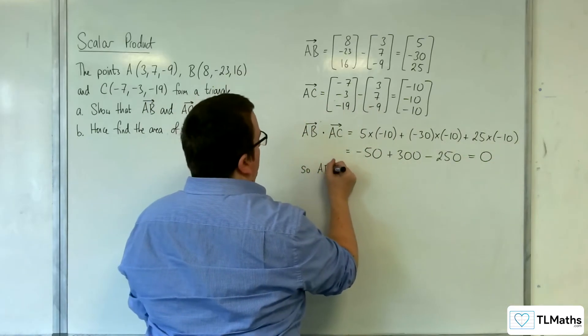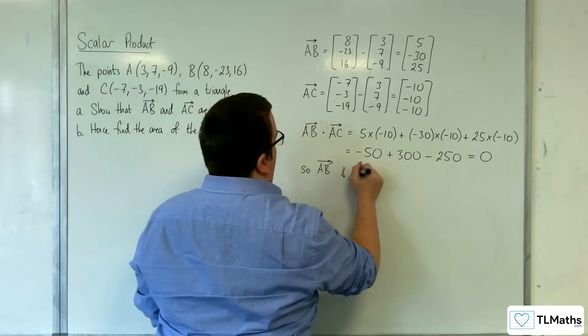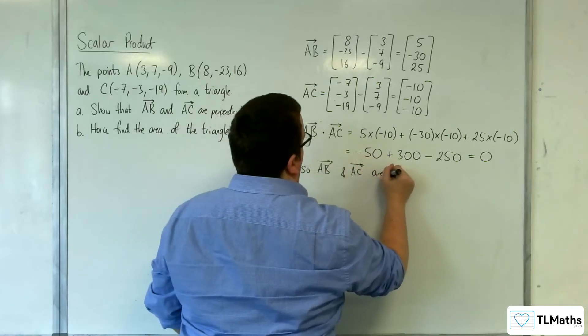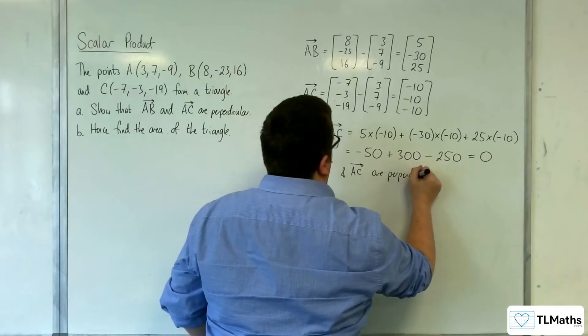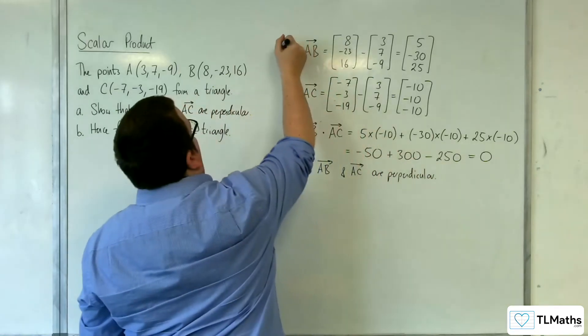So AB and AC are perpendicular, as required. So that's part A.